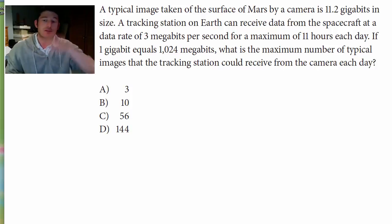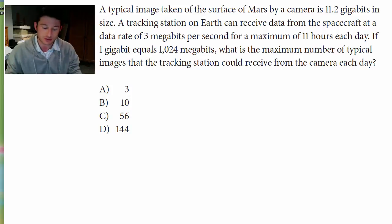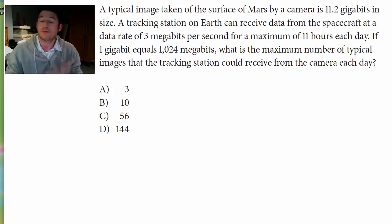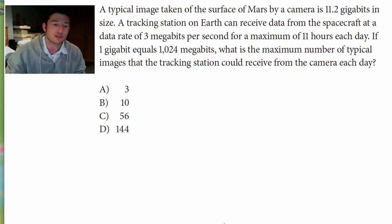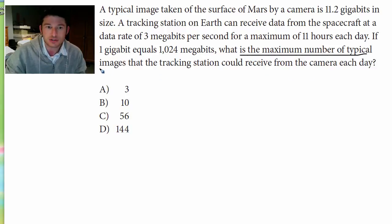Okay, so obviously they want you to do some conversions here, going from gigabits to megabits and vice versa. We've got to figure out what do we want to find first. What does the question ask us to find? Why don't we identify that — and again, it's at the end: what is the maximum number of images?